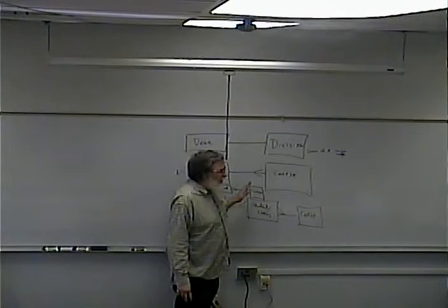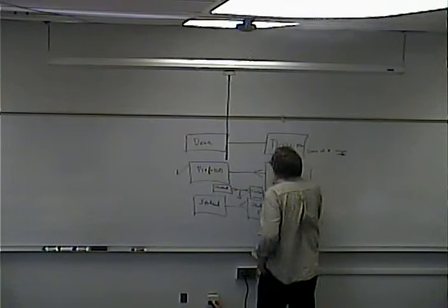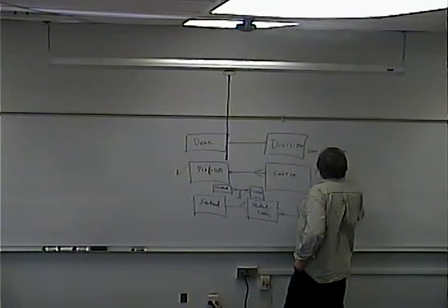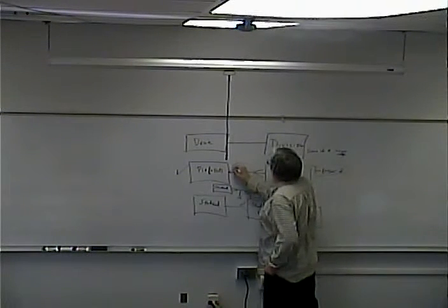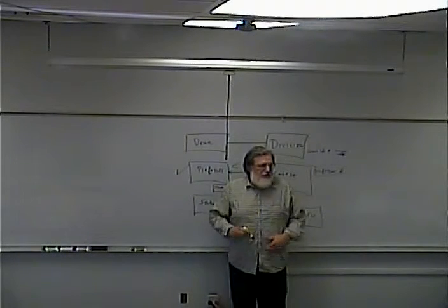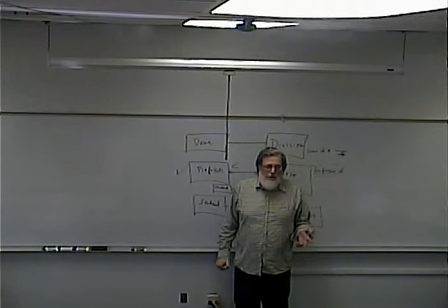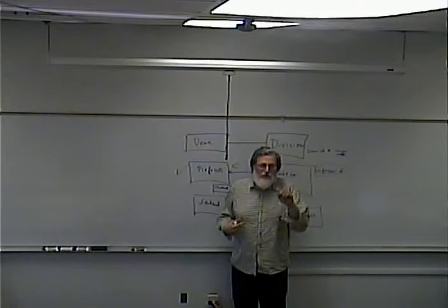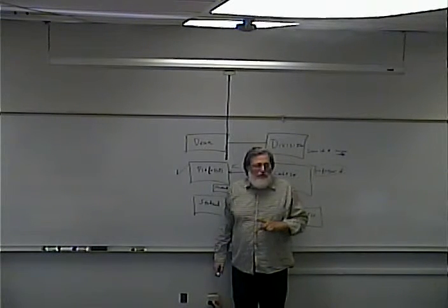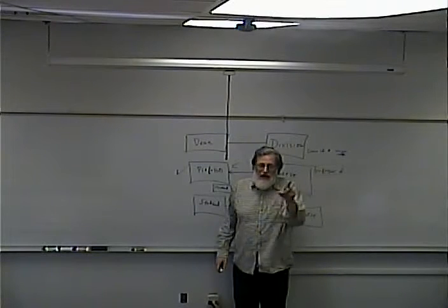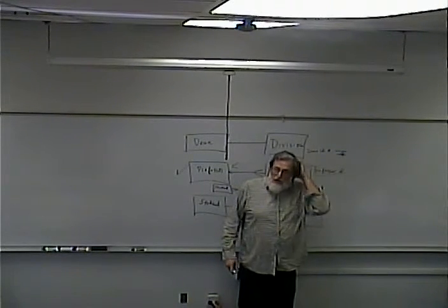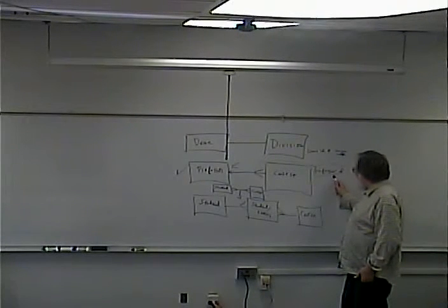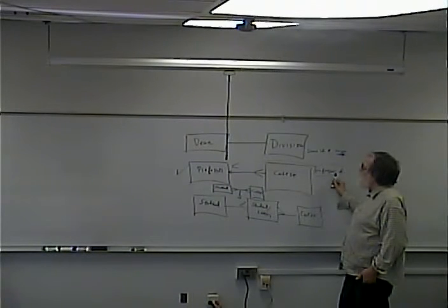One-to-many relationships. This is very mechanical: you make sure that the many side has the primary key of the one side. The many side points to the one side. In this class there's a one-to-many relationship between professor and student. If I asked you all to point to the professor in the classroom, you could all point to me. But if you asked me to point to the student, I couldn't — there's a bunch of students. The one can't point to the many; the many can point to the one. So you're going to have a foreign key or professor ID in the course table that will point to the professor.